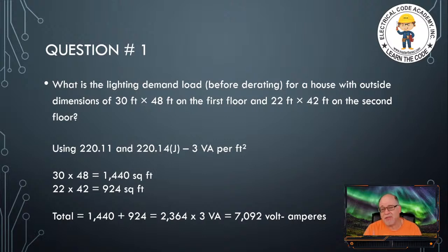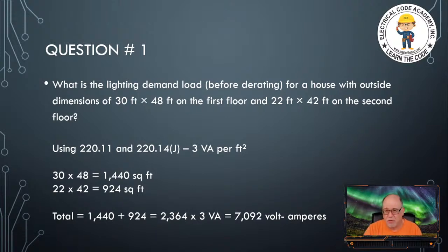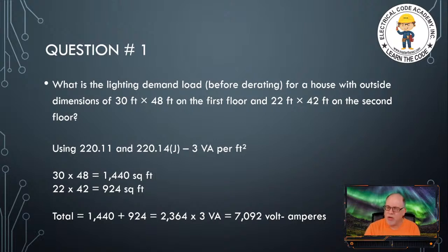Section 220.14J is where it really needed to be, because it's dealing with dwelling units. This covers calculating general lighting, which also includes general use receptacles — the receptacles in your bedroom, living room, basement, and similar areas. Those are called general use. So if you look at 220.14J, that's now where you get the rule for 3VA per square foot.